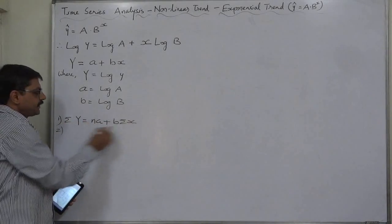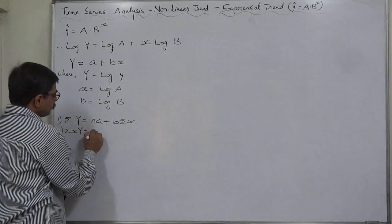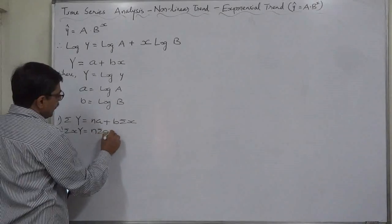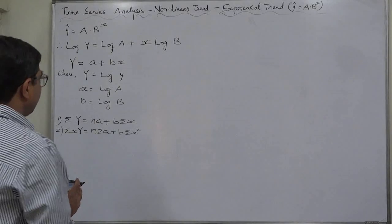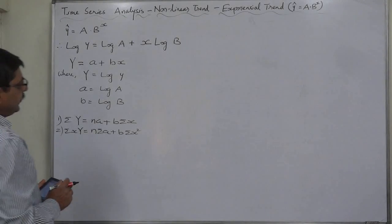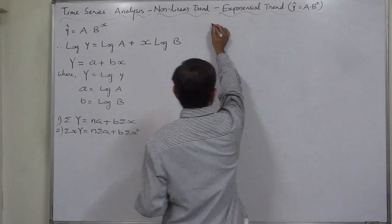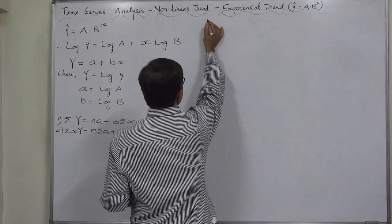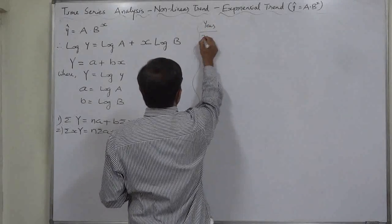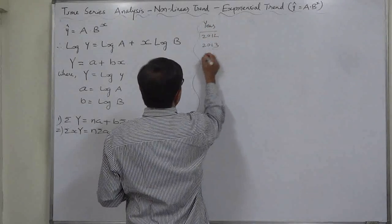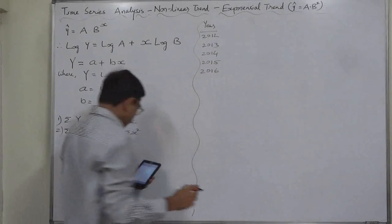The second normal equation is obtained by multiplying the first by x: sigma x·Y equals a·sigma x plus b·sigma x squared. Now let's take a case. The time series we have is for years 2012, 2013, 2014, 2015, and 2016.